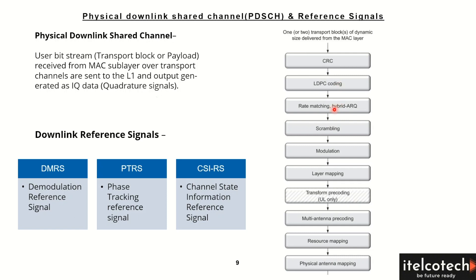If any information is repeating, rate matching will automatically detect that it does not need to be resent. After that, scrambling happens — it identifies any interference by identifying the PCI for different cells. If the same signal strength is coming from different cells, it will identify which PCI needs to be considered and which needs to be ignored, so there is no interference.